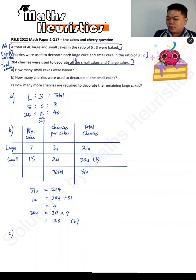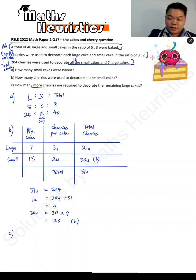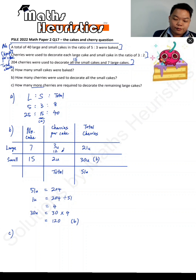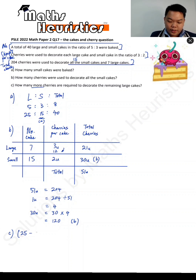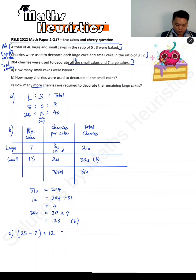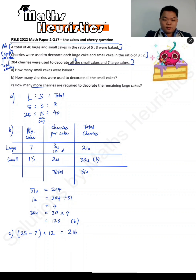For Part C, how many more cherries are required to decorate the remaining large cakes? Every large cake requires 12 cherries — 3 times 4 gives you 12. There are 25 large cakes in total, minus the 7 already decorated, leaving 18 remaining. Multiply 18 by 12 to get 216. That resolves Part C.